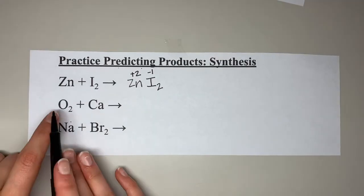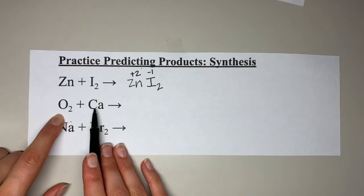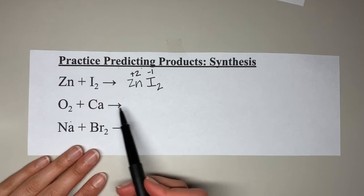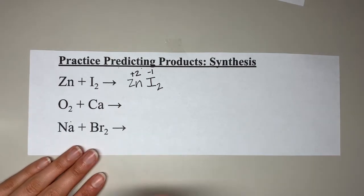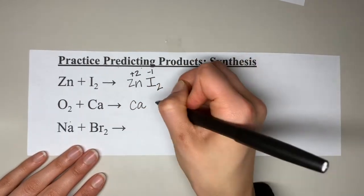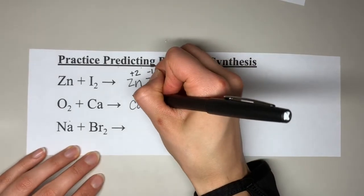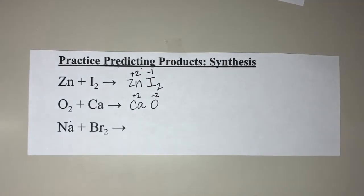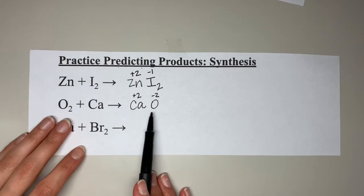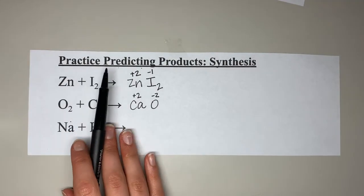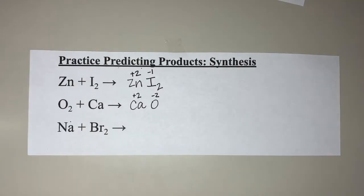Next: O2 reacting with calcium. We form a product that is a compound consisting of calcium and oxygen. Calcium is a +2 charge and oxygen is a −2. Those are equal and opposite, so they cancel out, leaving us with CaO as our product. Again, this is not balanced — we would have to balance it — but we are just focusing on predicting products.